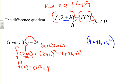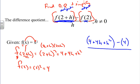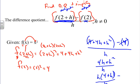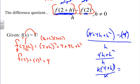f of 2 plus h simplified is 4 plus 4h plus h squared, minus f of 2, which is 4, all over h. Notice we have positive 4 and negative 4, those cancel. We're left with 4h plus h squared all over h. We can factor out an h; the h's cancel, and we're left with 4 plus h. Obviously h can't equal 0, and that's our simplified answer.